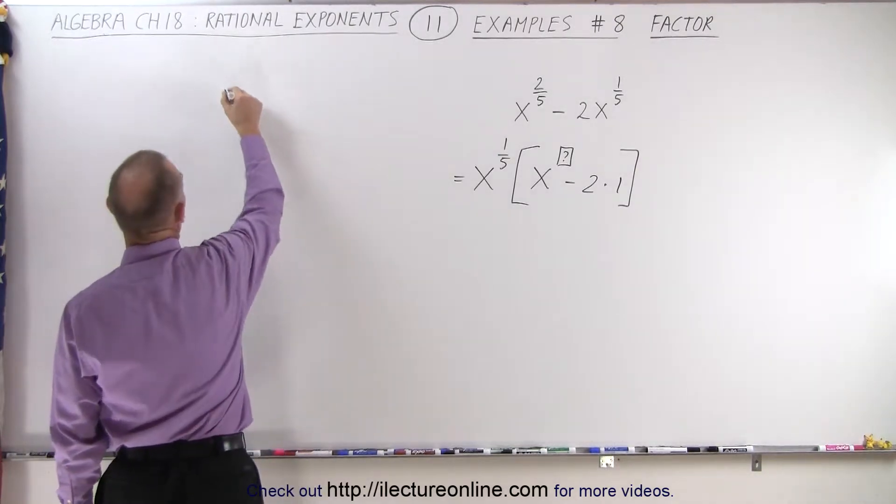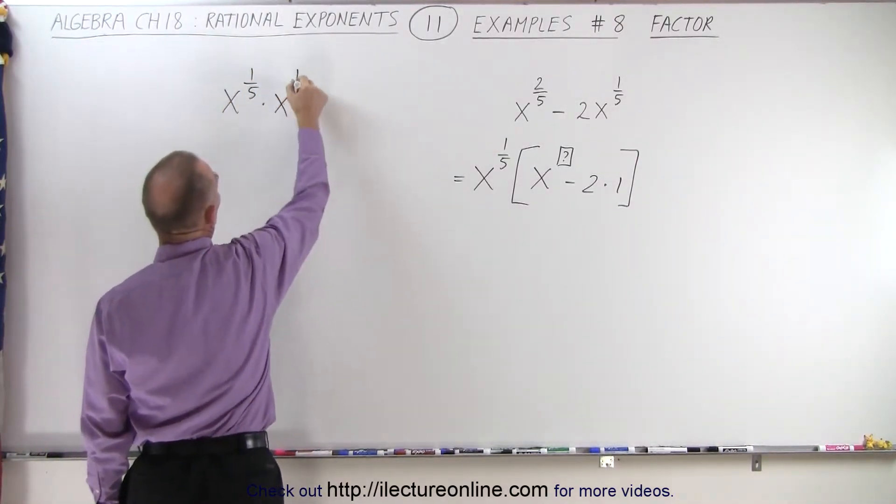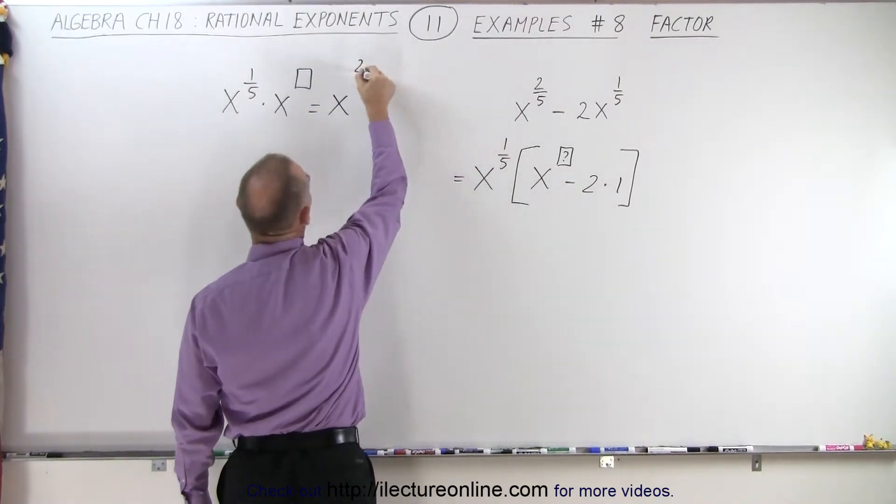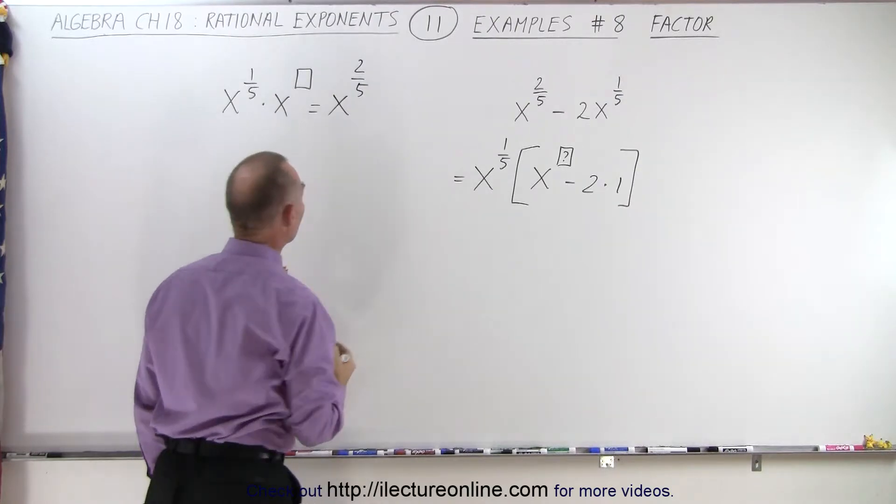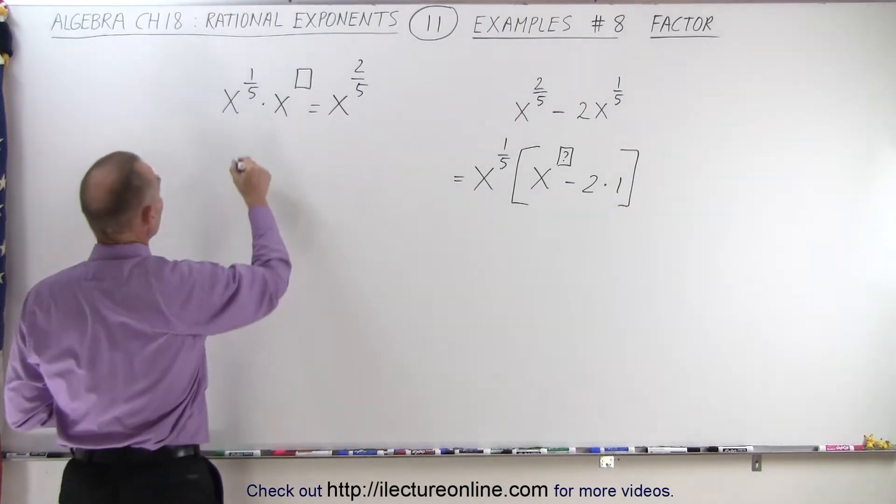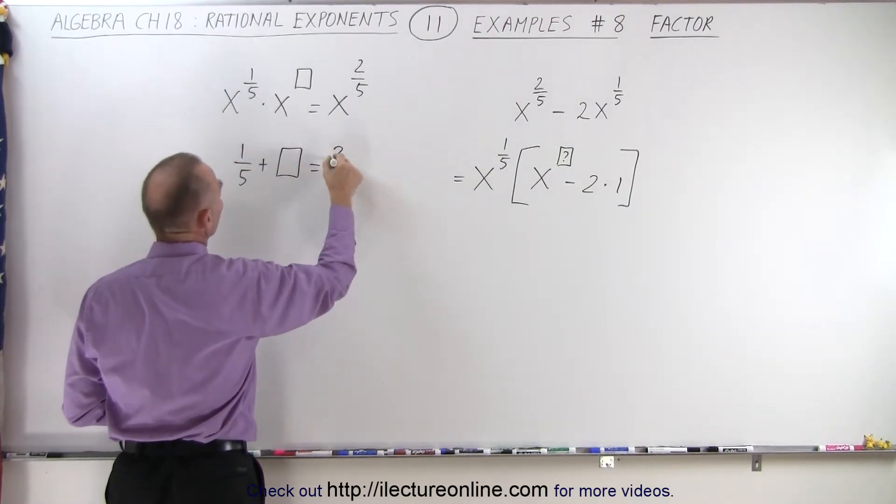Well, there we realize that x to the 1 fifth multiplied times x to some unknown exponent should give us back what we started with, which is x to the 2 fifths. Now we know that when we multiply and they have exponents, we need to add exponents, which means that 1 fifth plus some unknown equals 2 fifths.